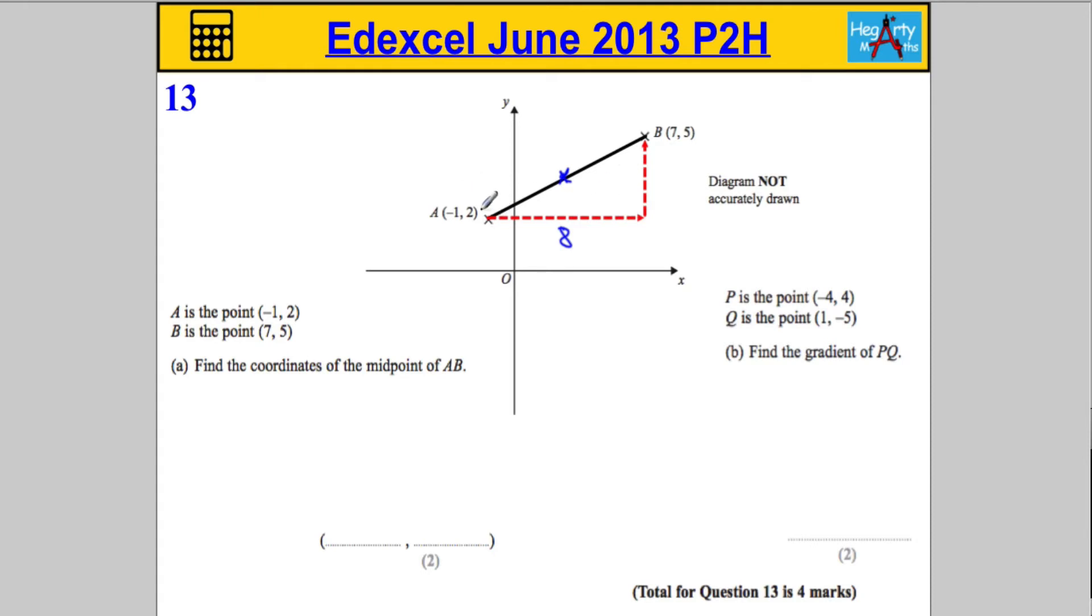And then also in a similar way, if the y-coordinate here is 2 and the y-coordinate here is 5, it must have travelled up 3 units.